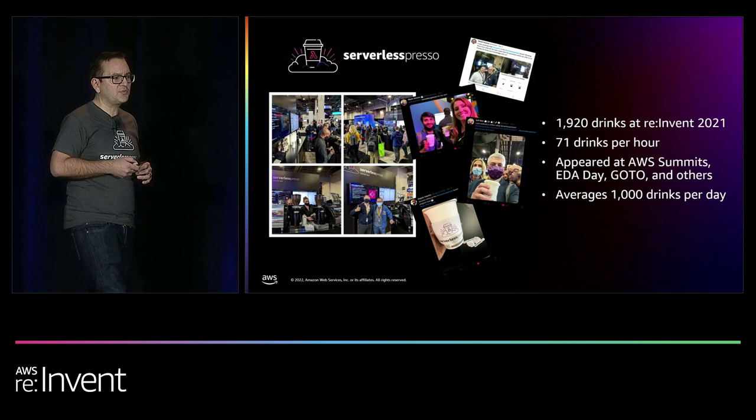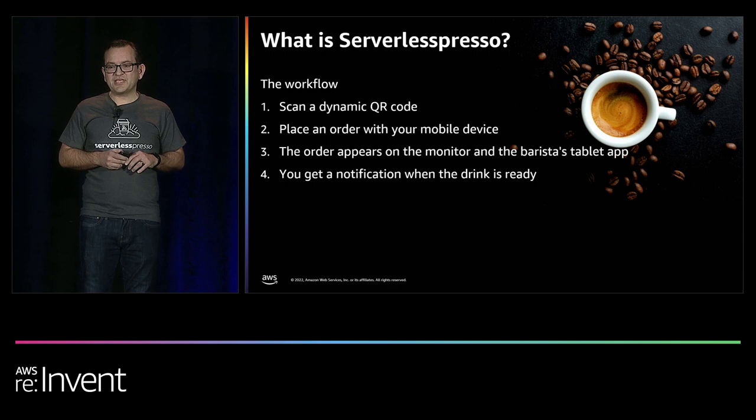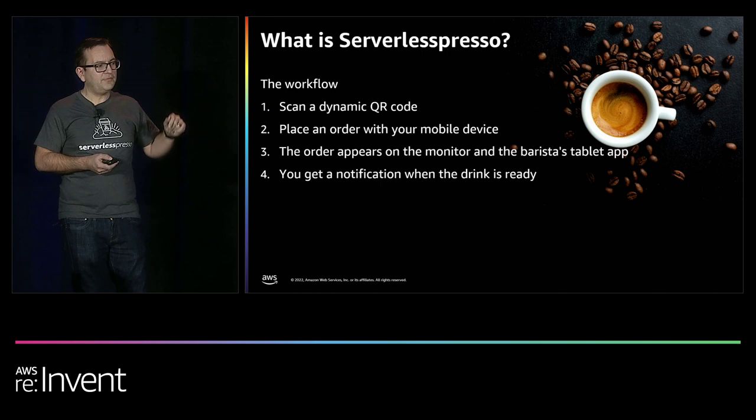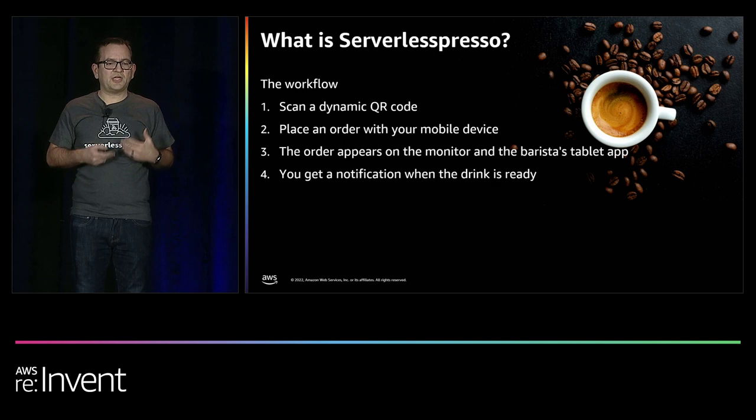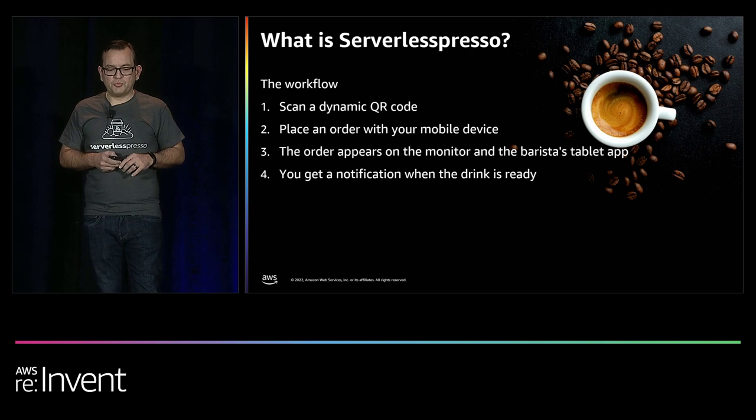The flow works like this: you walk up to the booth with your cell phone, scan a QR code that changes on the screen behind you, log in with your phone number, and that loads the menu so you can place your order. You'll see the order appear on the screens around you, and as the order gets produced, you'll see notifications that go to the screens and also to the phone in your pocket. You also get a cup of coffee at the end — that's the key part.